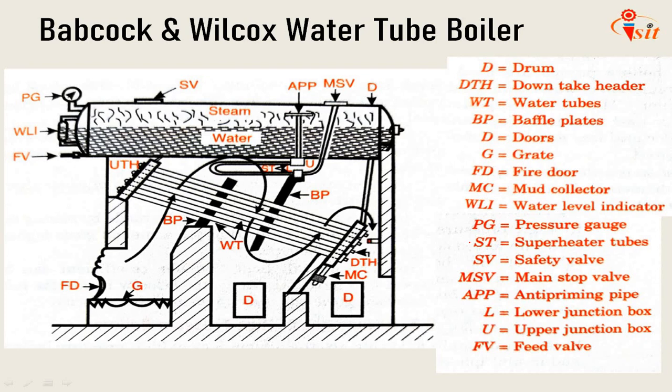The first type of water tube boiler, which is very famous and widely used, is the Babcock and Wilcox water tube boiler. Water tube boilers are used when pressure above 10 bar and capacity in excess of 7000 kg of steam per hour is required. The Babcock and Wilcox boiler is an example of a horizontal straight tube boiler and may be designed for stationary or marine purposes.